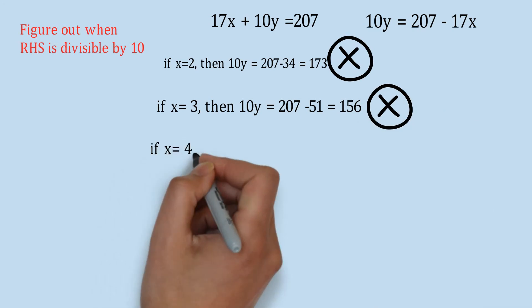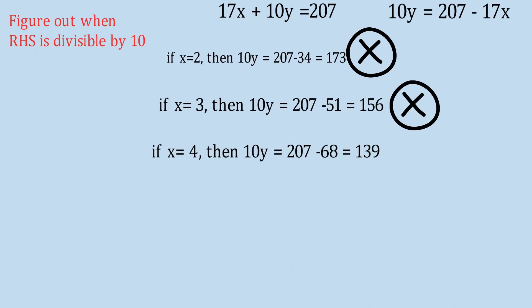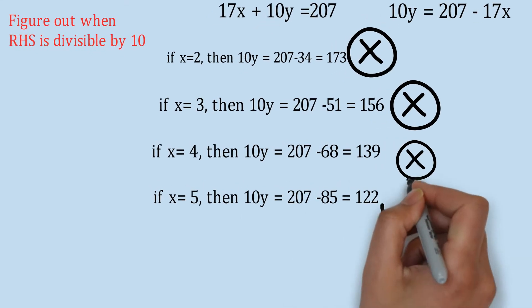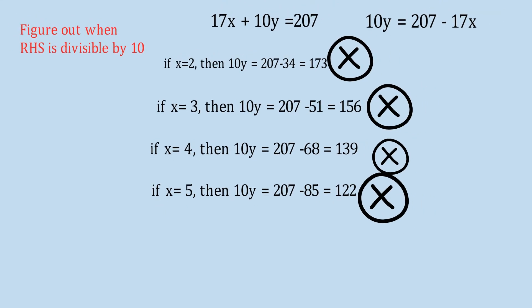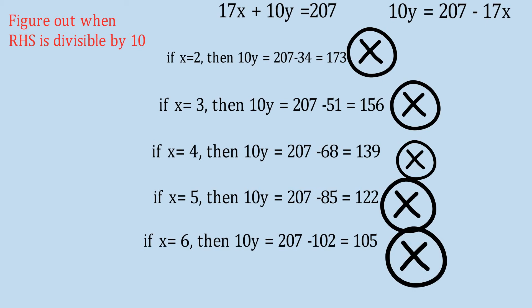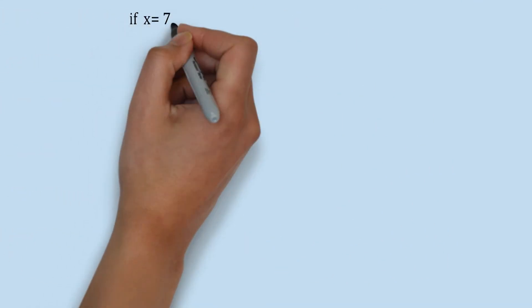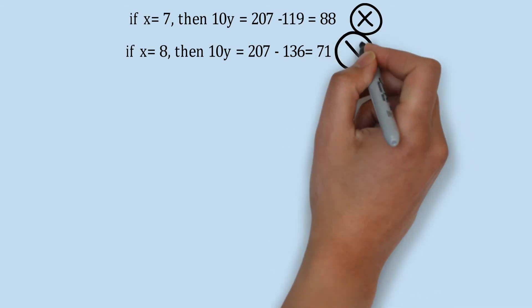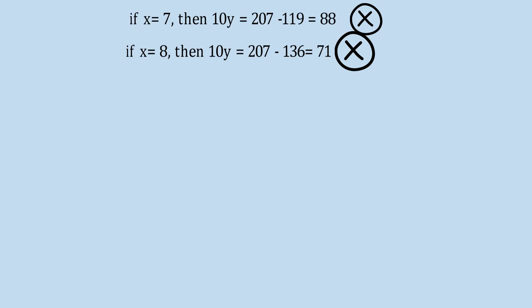Continuing: if x equals 5, then 10y equals 122 - not divisible by 10. If x equals 6, the right-hand side is 105 - not divisible by 10. If x equals 7, then 10y equals 88 - not divisible by 10. If x equals 8, then 10y equals 71 - not divisible by 10. If x equals 9, then 10y equals 54 - also not divisible by 10.